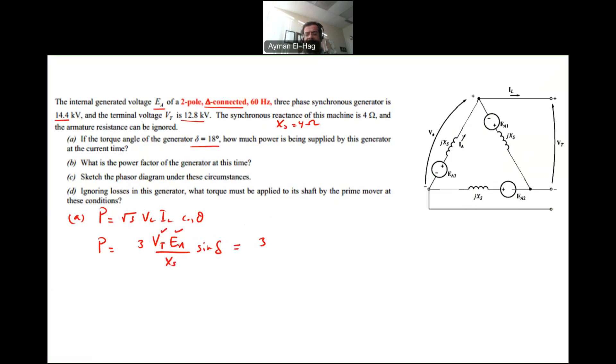So this equals Vt, which is 12.8 kilovolt, times EA, which is 14.4 kilovolt, divided by Xs, which is 4 ohm,